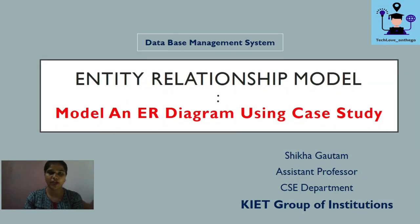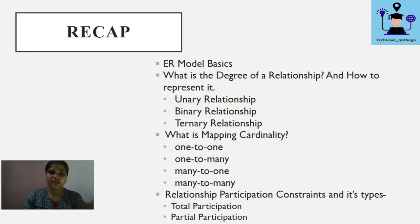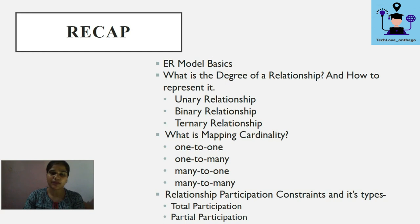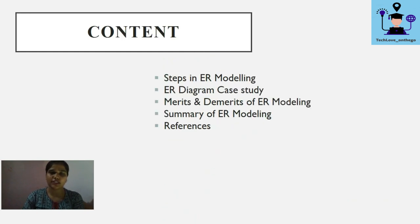Today's topic is modeling an ER diagram using a case study. In previous lectures we discussed ER basics, degree of a relationship, and various types like unary, binary, and ternary relations. We also covered mapping cardinalities — one-to-one, one-to-many, many-to-one, and many-to-many — as well as relationship participation constraints, including total and partial participation.